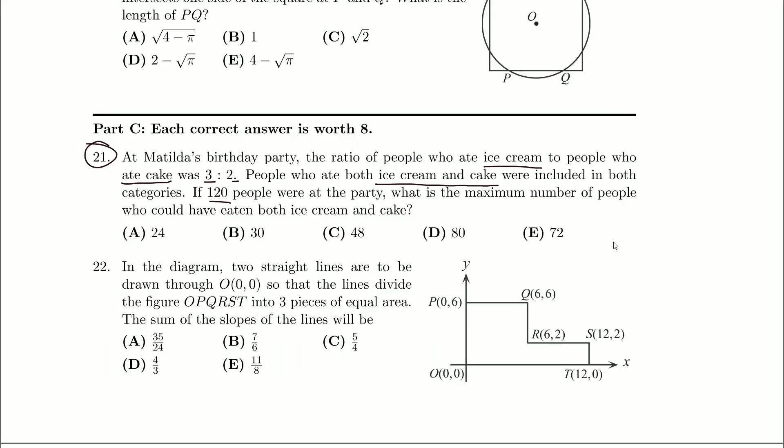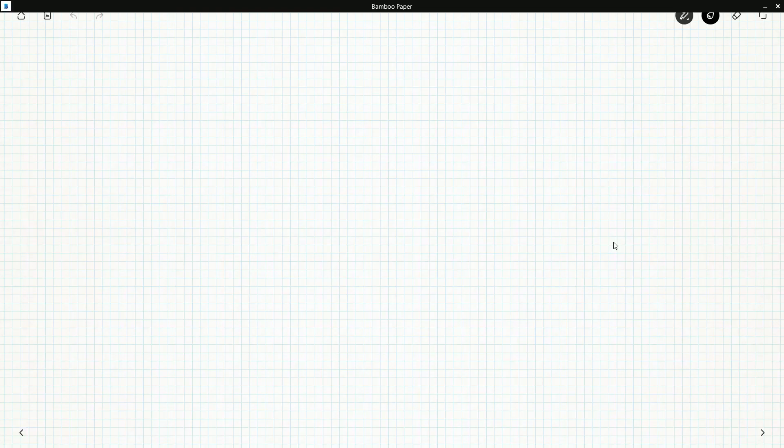Maximum number of people. Because I suppose we could have three people who ate ice cream, two people who ate cake, and 115 people who didn't have anything. So we sort of want to maximize our amounts. What could we say?